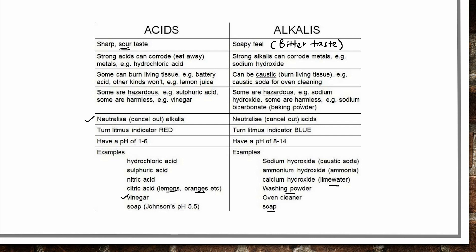Acids have the property to neutralize alkalis, and alkalis have the property to neutralize acids. Acid turns blue litmus indicator to red, while alkali turns red litmus indicator to blue — a concept you learned in primary school. Acid has a pH value of 1 to 6, which is less than 7. Alkali has a pH value of 8 to 14, which is greater than 7. The value of 7 is neutral.